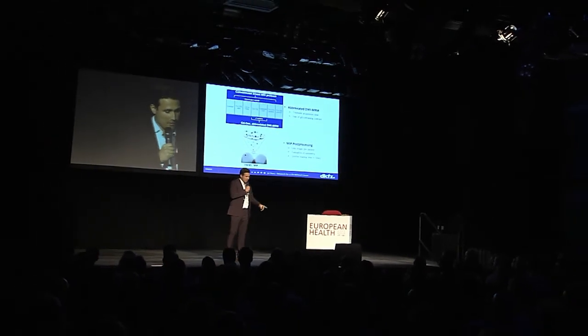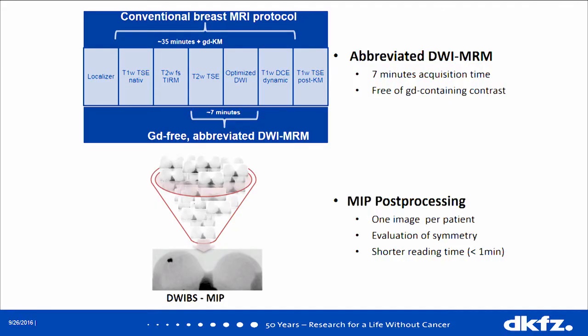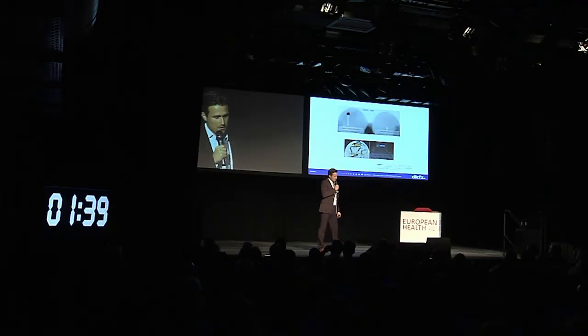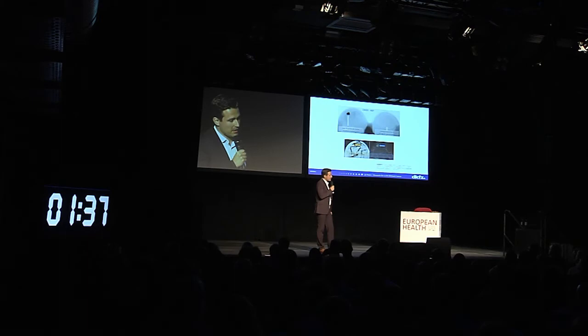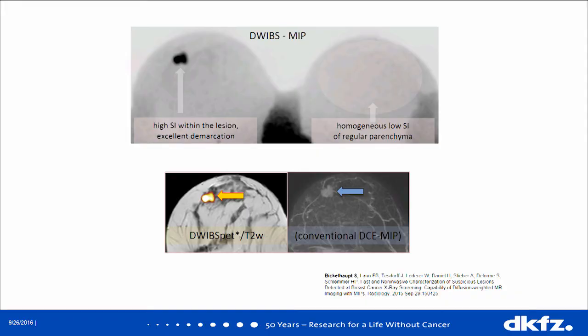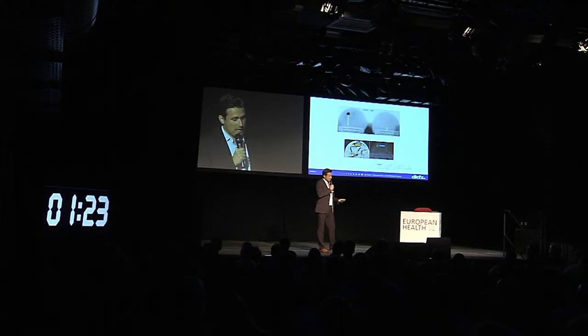As you see, there are many, many pictures. You can fuse them down to one image, and as radiologists are quite lazy, they're happy that you just have to look at one image, which takes just one minute to identify potential lesions. In this DWIPS maximum intensity projection, you can identify the lesion in the right breast and the left breast. You see homogeneous tissue, and because you don't lose the 3D information, you can also look in the T2-weighted image and create a fusion — like you know it from PET — to further characterize the lesion.